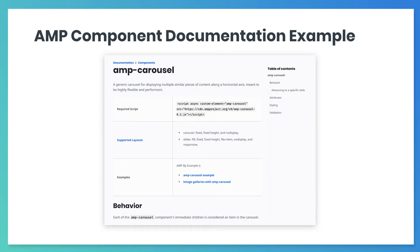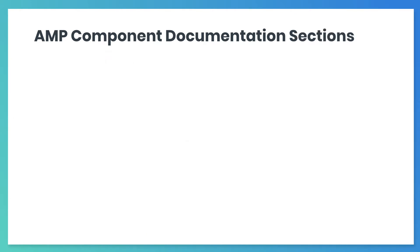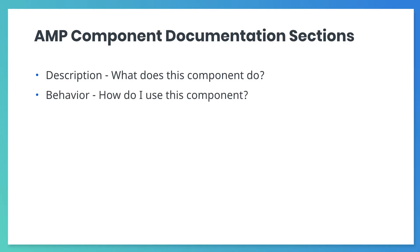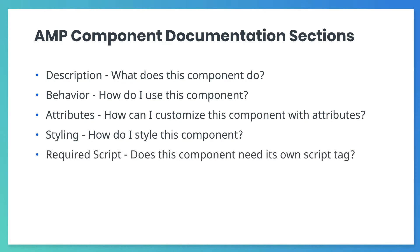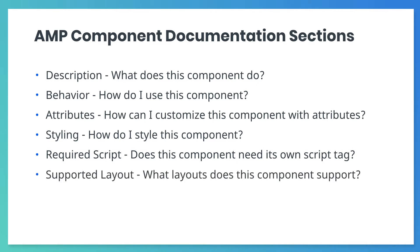Here's a screenshot of documentation for AMP Carousel. In the documentation for any AMP component, you will look for items like: description, for information on what the component does; behavior, for how the component works; attributes, for how to customize the component; styling, for how to style the component or how to use CSS to alter its appearance; required script, the script tag that needs to be added to the head to make the component work; and supported layouts, which tells you which layout types are valid for this component.